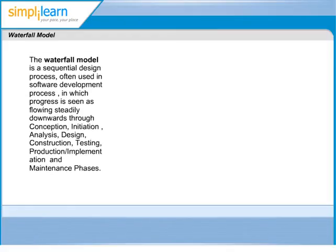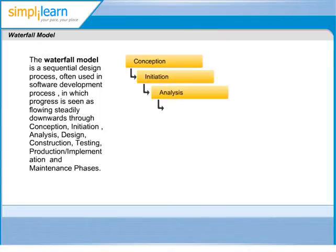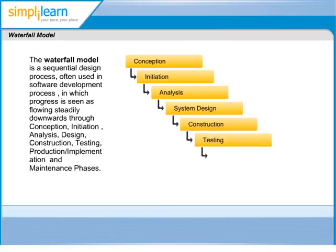Waterfall model is a sequential design process in which progress is seen as flowing steadily downwards through conception, initiation, analysis, design, construction, testing, production/implementation and maintenance phases. Let us go over each phase to understand the waterfall model in more detail.